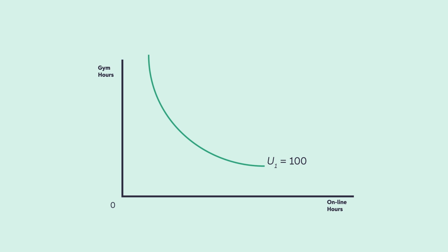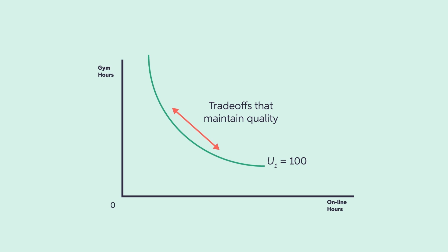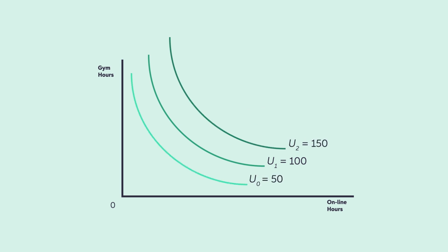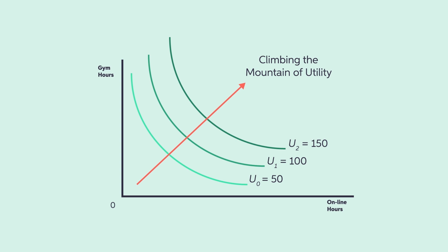Each indifference curve indicates the level of a consumer's utility, much like the contour lines of a topographical map show differences in elevation. A contour line reveals all the combinations of spatial dimensions on the map, such as longitude and latitude, that produce the same elevation. Likewise, an indifference curve reveals all the quantity combinations of two goods that produce the same level of consumer utility. A utility map of these indifference curves outlines the potential routes the consumer can take up the utility hill by acquiring greater quantities of goods combinations.